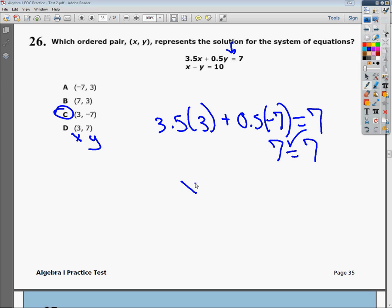For the other one, for x minus y equals 10, I need to plug in, for the x, 3 and minus y would be negative 7 equals 10. Well, 3 minus negative 7 is the same as 3 plus 7, which is 10. So that's a true statement. So I know that C is the correct answer because it made it true for both.